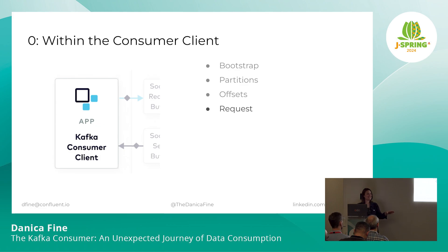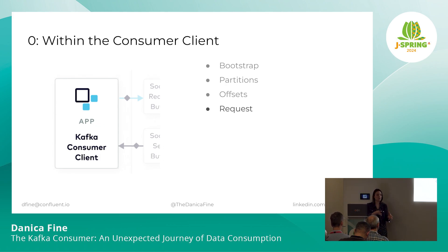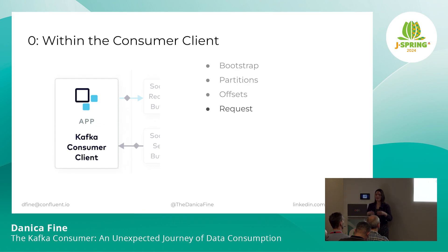Finally we have everything we need to issue a fetch for the Hobbit updates data in that topic. The consumers are maintaining connections to brokers all the time — a number of socket connections to some number of Kafka brokers based on where their topic partitions live. At the very minimum, they're going to be connected to those brokers that own the topic partitions they're reading from. They'll also be connected to the broker that serves as the consumer group coordinator, just to send heartbeats and receive any metadata they need for the group.